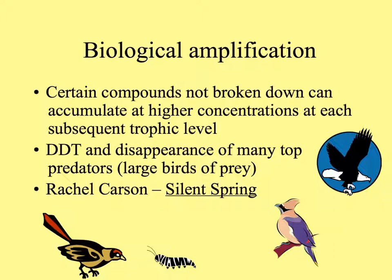DDT was a chemical used very widely to control insects eating plants in gardens and in agriculture. After a few years, environmentalists started noticing fewer songbirds around, because who eats insects but songbirds? And later on, some of the top predator birds, eagles and condors, started not doing well either. Rachel Carson was an environmentalist who first made the public aware of this with her book, Silent Spring.